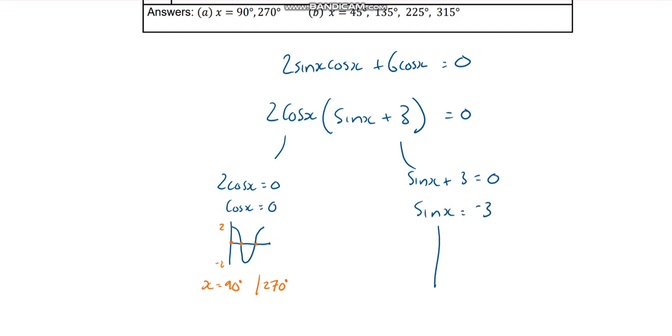Well, sine x then is equal to negative 3. So let's have a think about that. Let's look at our graph for sine x. So sine x equal to 1, negative 1. Now you're 3. It's way down here somewhere. It doesn't exist, does it? So that is not a solution. We can't solve that. That doesn't make any sense. So you can just disregard that one.